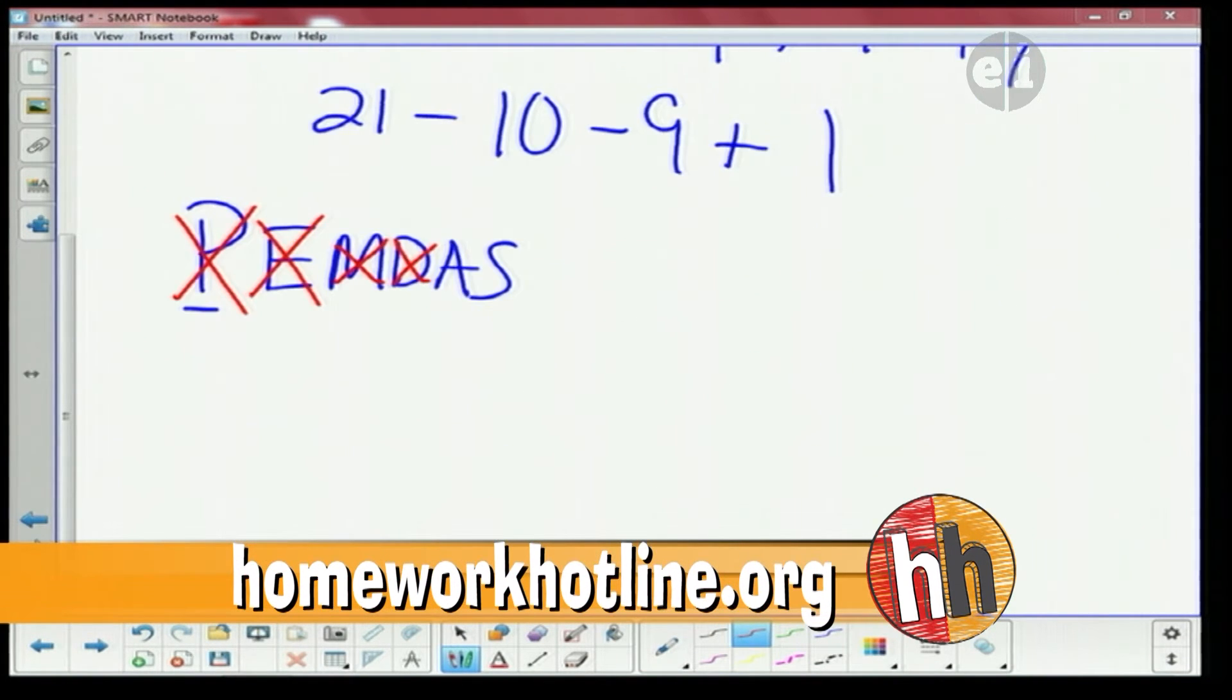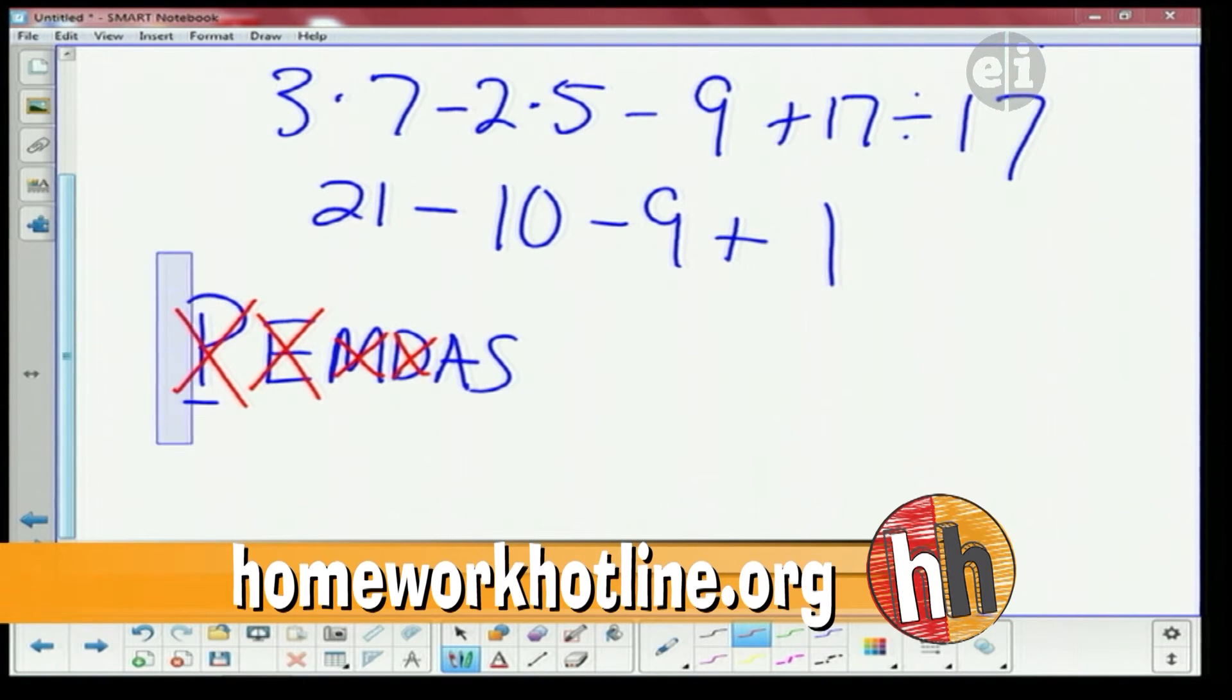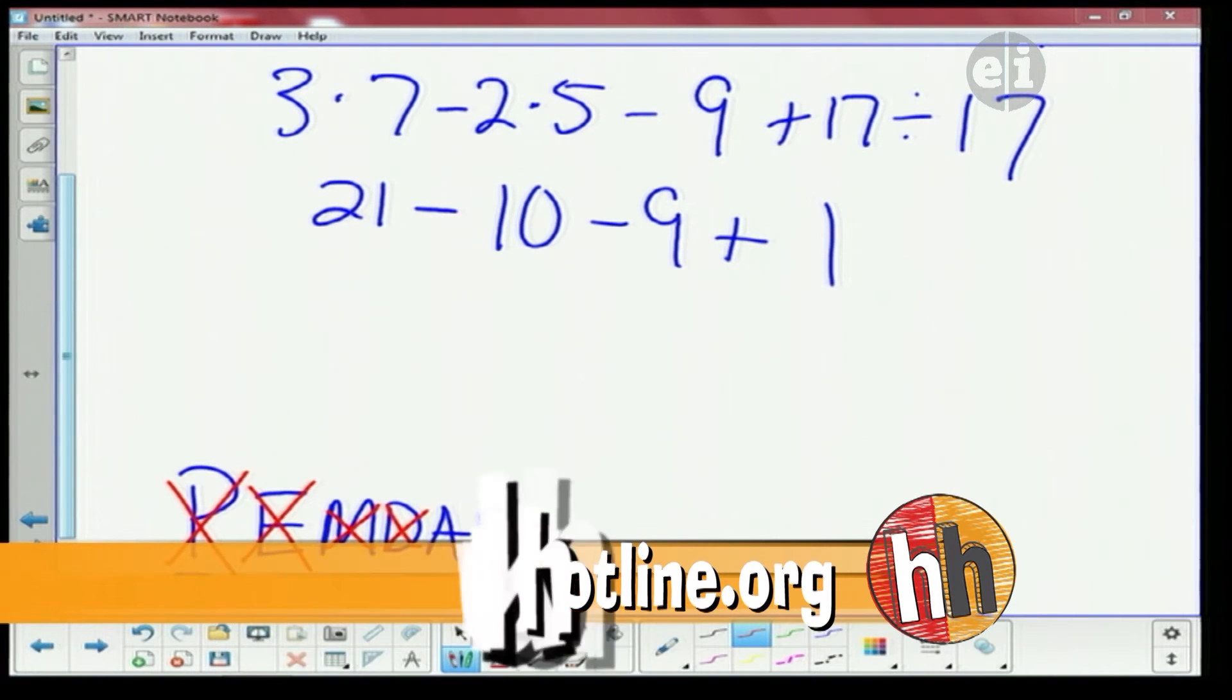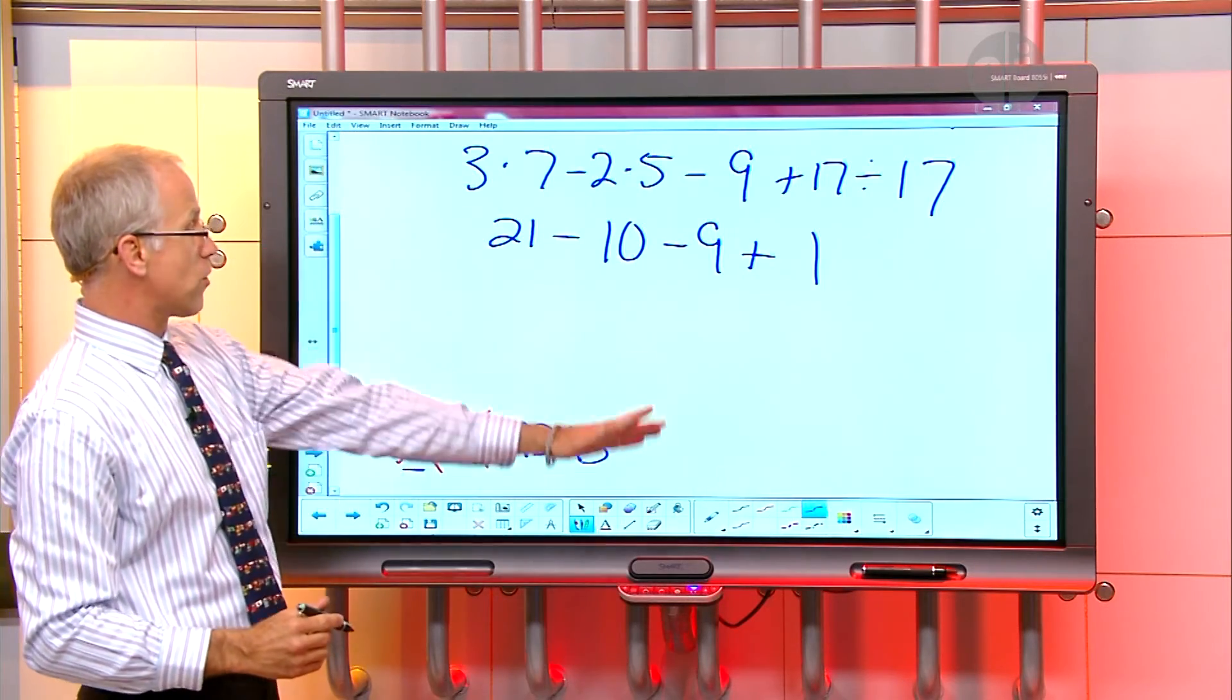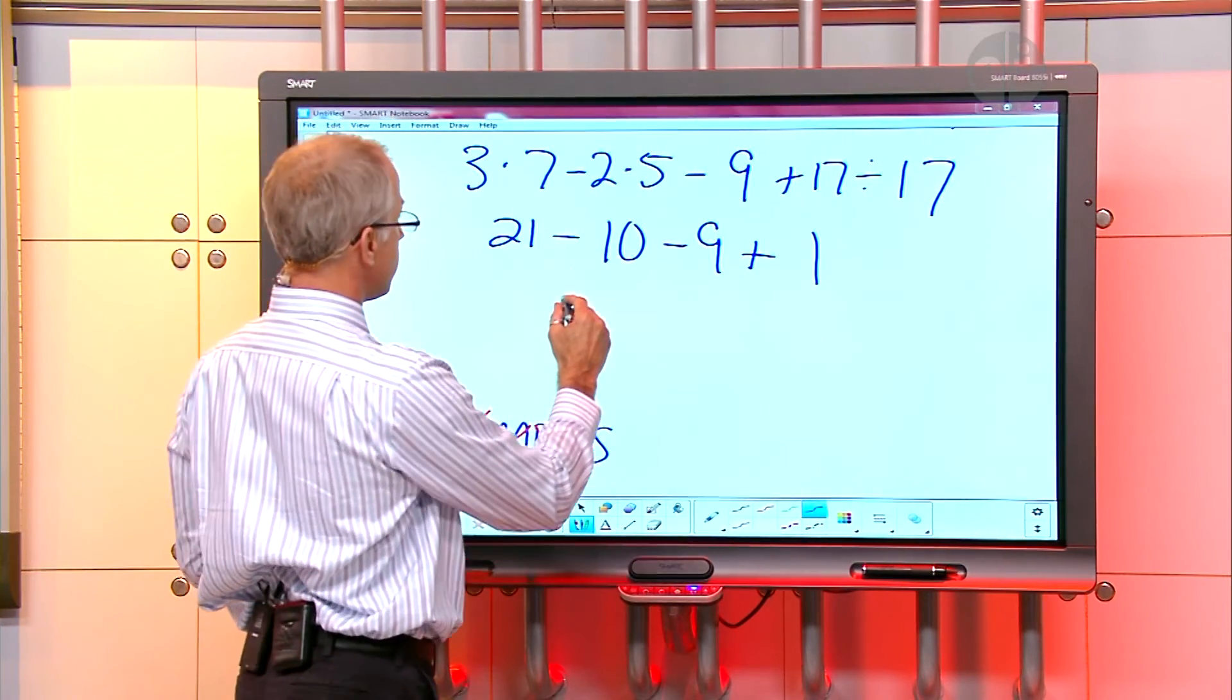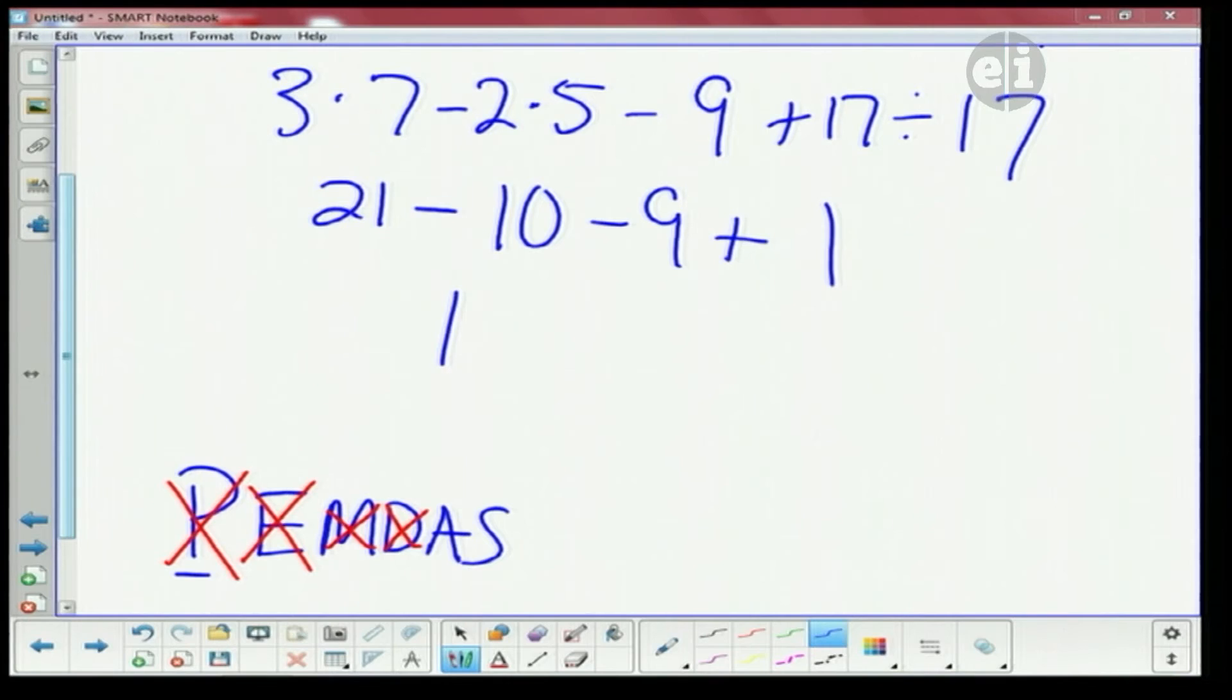Let me scroll down, get a little longer page here. We're going to block this off again and move it down. Alright, so now we need to do our addition and subtraction and again we go from left to right. So we go 21 minus 10. Right. 21 minus 10 is 11, right? Correct. Minus 9 is 2. And plus 1 is 3.